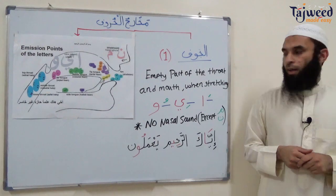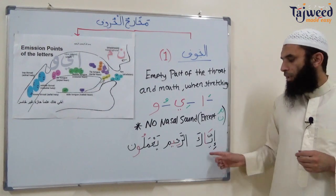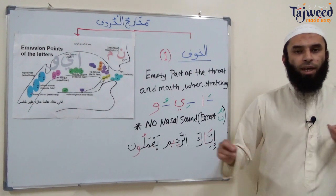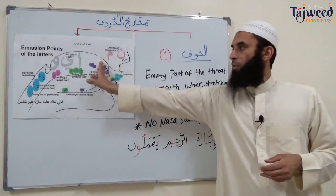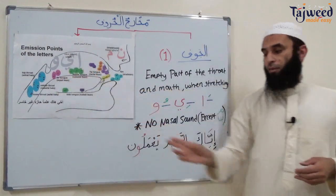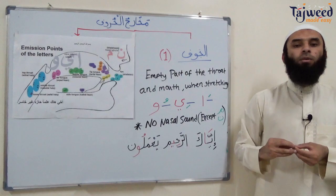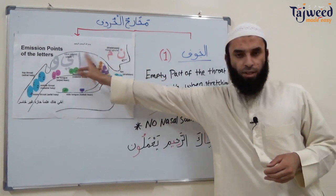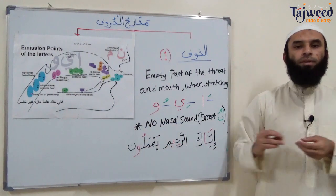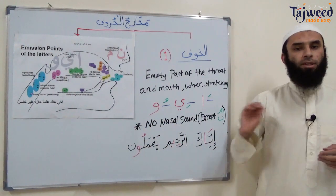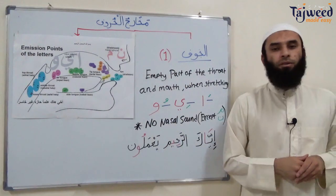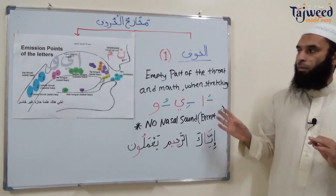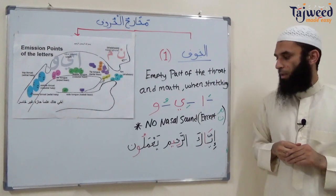If I say الرَّحِيم — the حِيم part — the مَخْرَج point is the empty part of the throat. And يَعْمَلُون — the stretching part of the وَاو is the empty part of the throat. So three letters when stretching حُرُوف الْمَدّ — this is where the مَخْرَج point is: the whole area and the مَخْرَج point at the same time.